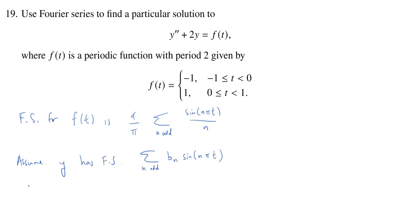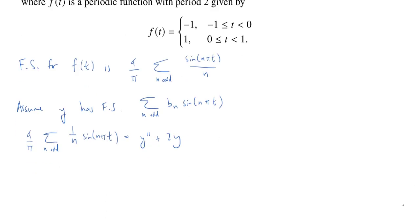So, if we do that, then we have 4 over π times the sum over n odd. And our coefficient is really 1 over n times sine of nπt. And that's going to equal y double prime plus 2y. And now we can actually evaluate y double prime with this Fourier series.